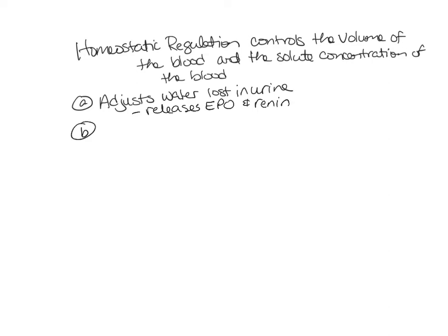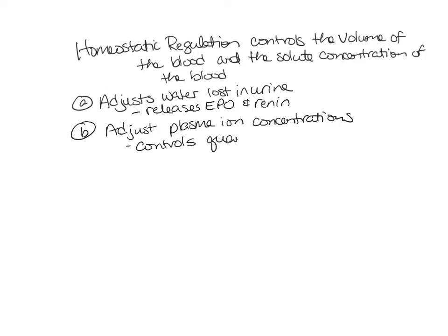Next, the kidney can adjust plasma ion concentrations. This means it's going to control the quantities of ions such as sodium, potassium, and chloride ions, and it can do this by controlling how much of these things are lost in the urine. If we lose more sodium, there will be less in the plasma. If we lose less potassium in the urine, there will be more potassium in the plasma.